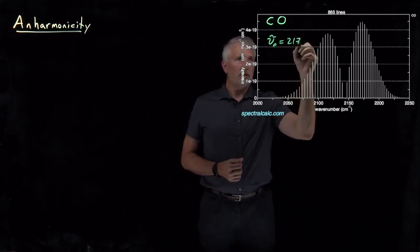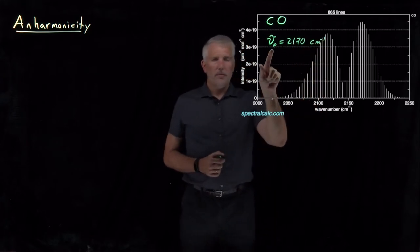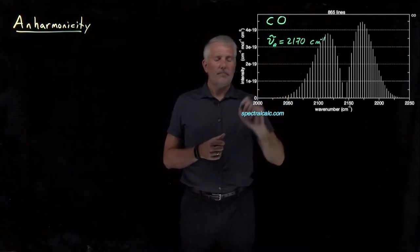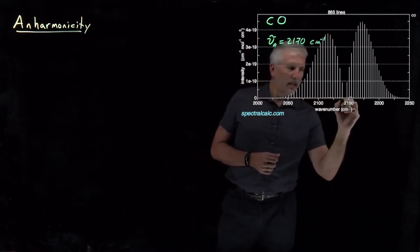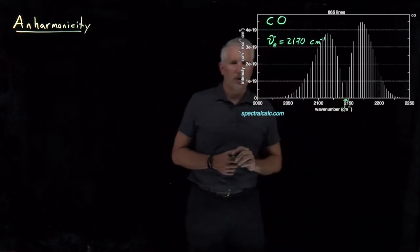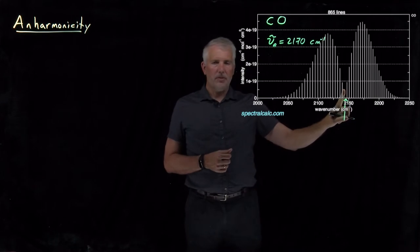The fundamental vibrational frequency for carbon monoxide is 2170 wavenumbers, and we'd think that would show up right where the gap appears in the middle of the spectrum.